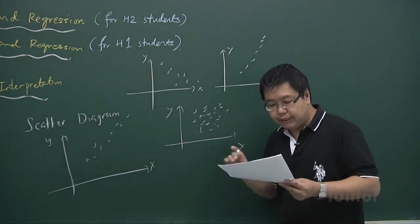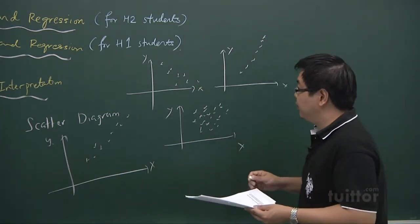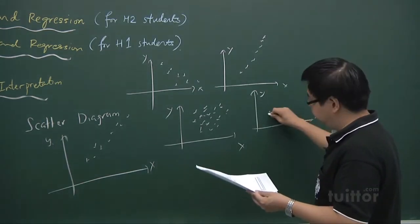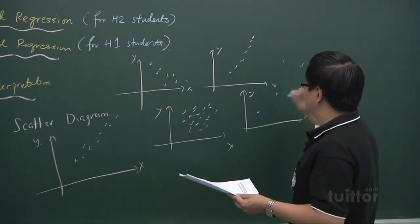And also, thirdly, it tells you the strength of the relationship. How do we see the strength of the relationship? If the points are scattered everywhere, in this way...